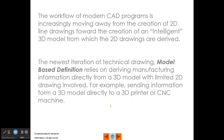The workflow in modern CAD programs is increasingly moving away from the creation of 2D line drawings toward the creation of an intelligent 3D model from which the 2D drawings are derived. We create a 3D model and then just project our views — front, top, side, whatever's needed — from the 3D model. We say it's an intelligent 3D model because if we change the shape or size of the 3D model, the projected views change automatically — we don't go in and redraw them two-dimensionally. The newest iteration of technical drawing is called model-based definition, where we derive manufacturing information directly from a 3D model with limited 2D drawing involved.